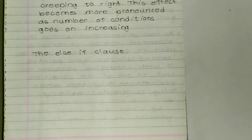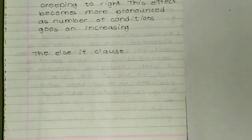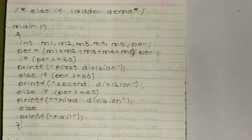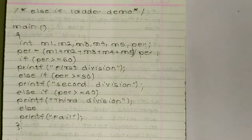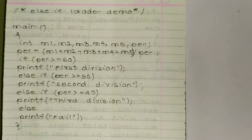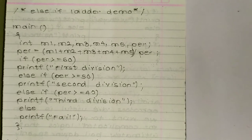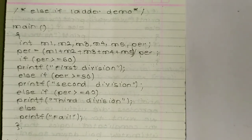Now we look at the else-if ladder. We are using the same program but with the else-if clause. The program is called 'else if ladder demo.' It uses the main function, which is compulsory in every C program, and declares integers m1 through m5 and per.